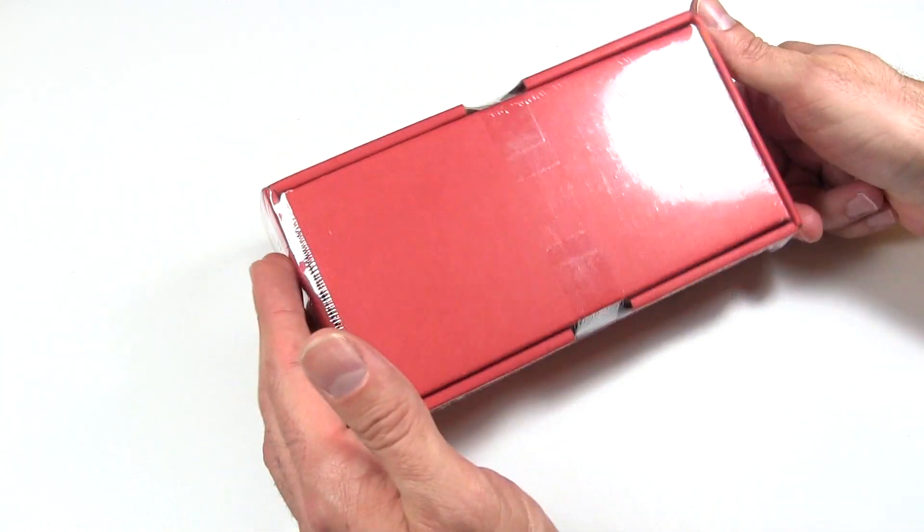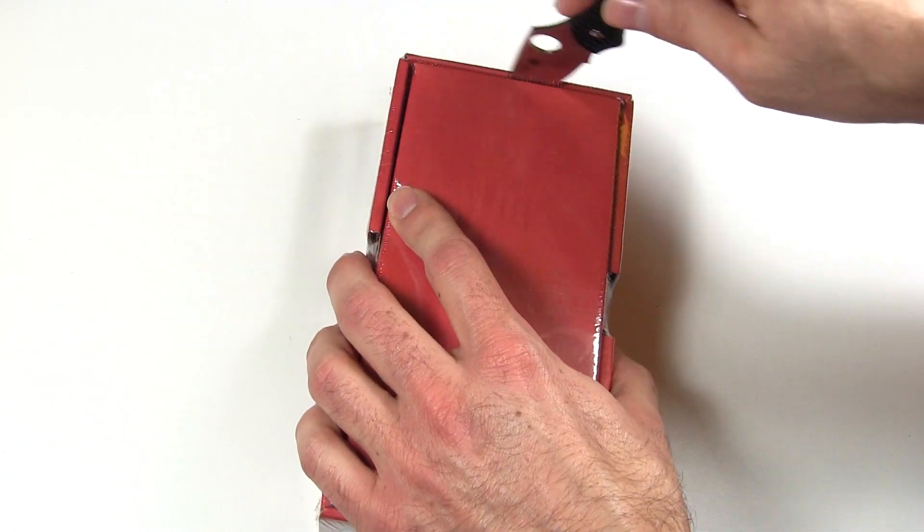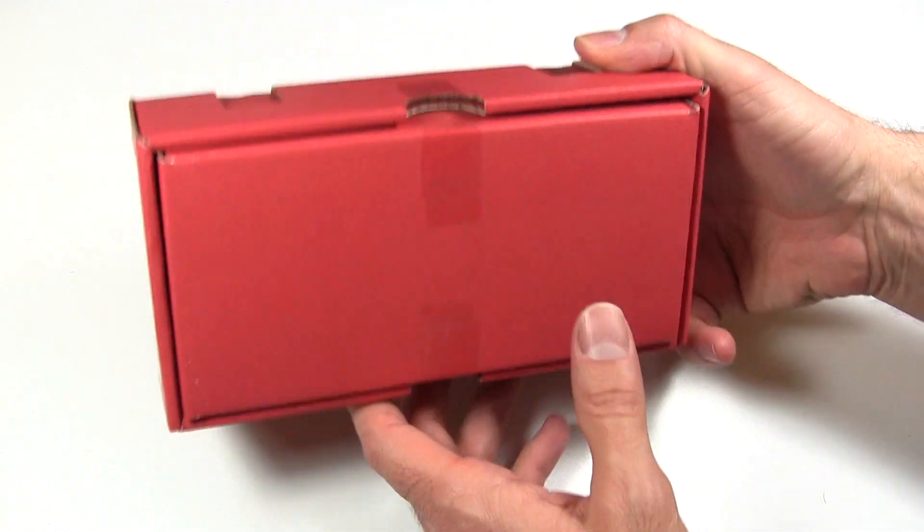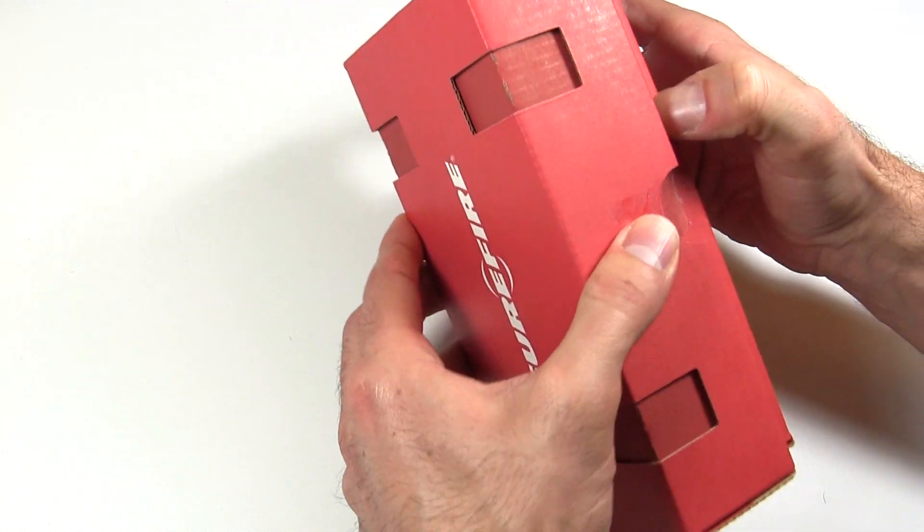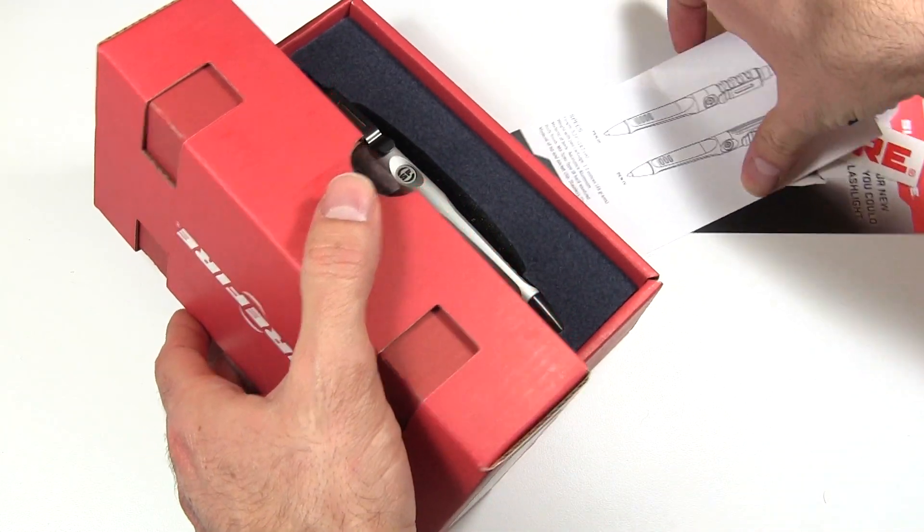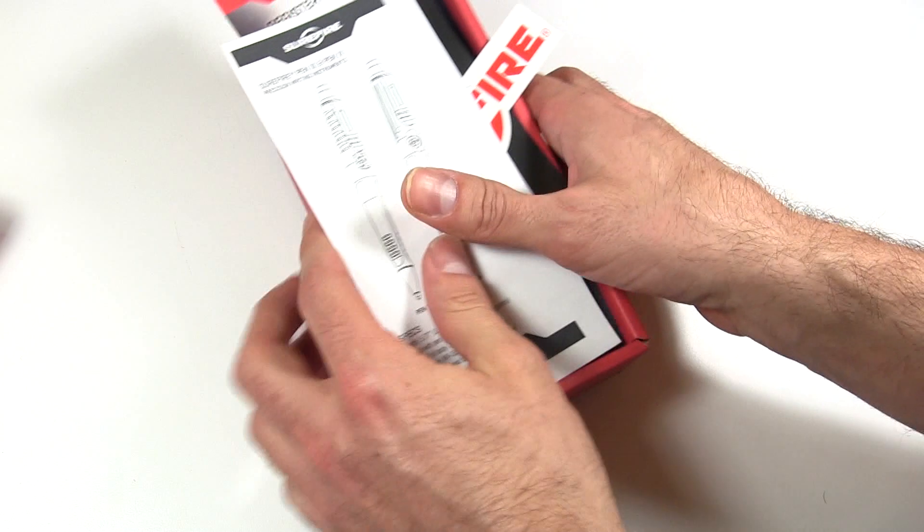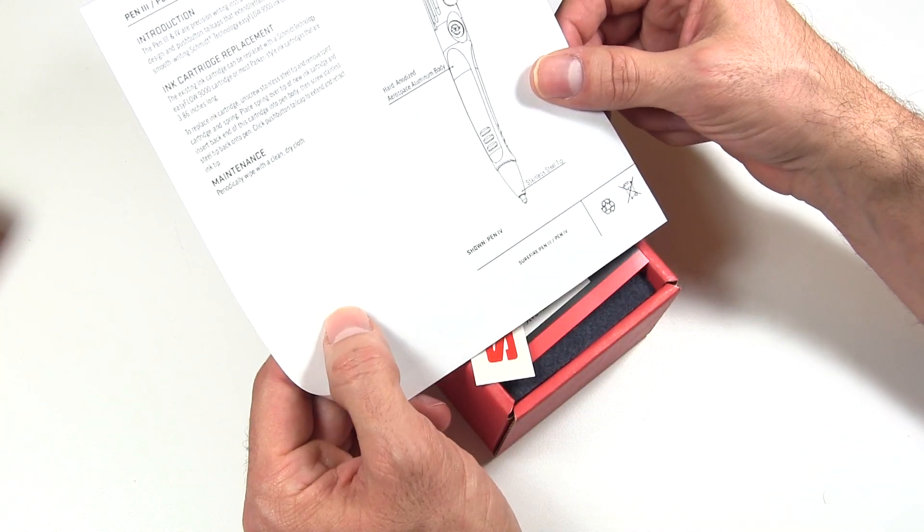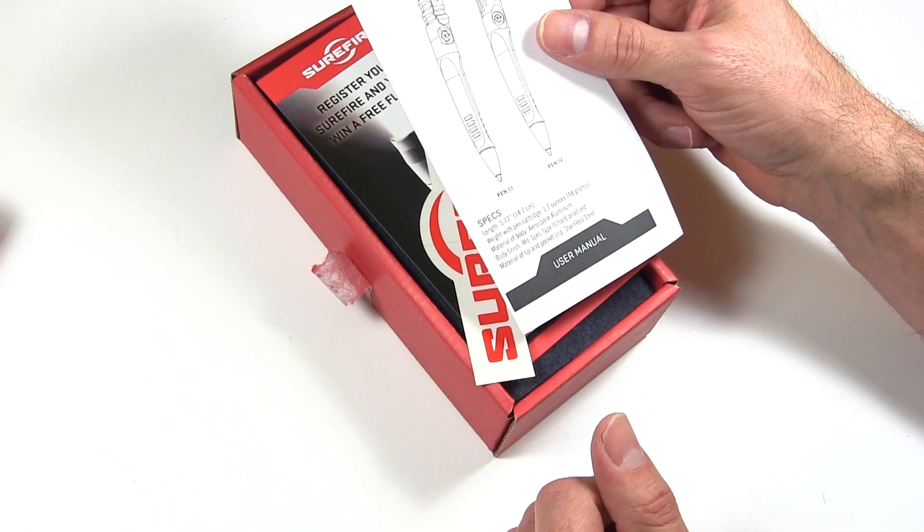So what have we? Surefire. Let's have a look inside this thing. Comes in a nice little box. There we go, out comes the stuff. Before we get to the pen, we have some instructions. I got the Surefire Pen 4. There were different options and that seemed like the best. It was very similar to the three with a few modifications.